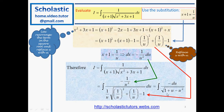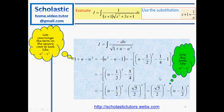We have the integral of du over the square root of 1 plus u minus u squared. We still can't apply the arc-sine formula directly, because we need a form like a squared minus x squared. To get that, we take the negative sign out to get u squared minus u minus 1, and try to complete the square by adding half of the coefficient of the u term.